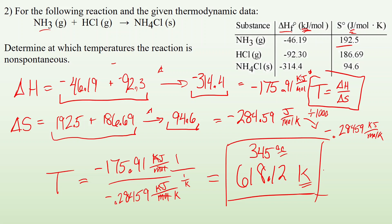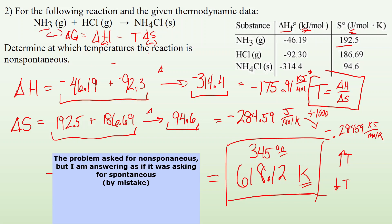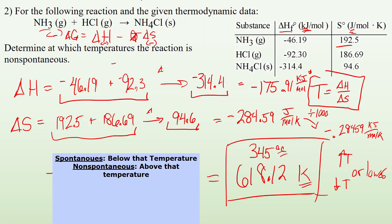Now we've found the transition temperature. Since both delta H and delta S are negative, plugging into delta G equals delta H minus T·delta S means we're subtracting a negative. To get a negative delta G — meaning spontaneous — we want temperature to be low so the T·delta S term stays small. This is like freezing: things give off heat and become more organized at low temperatures. So the reaction is spontaneous at this temperature or lower.